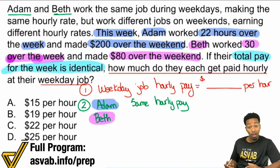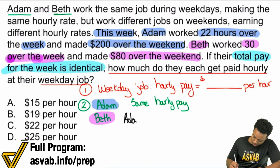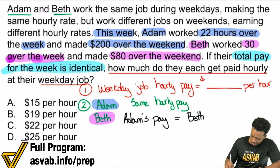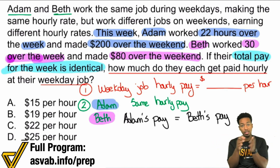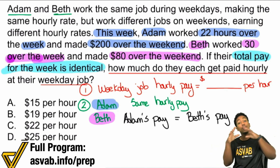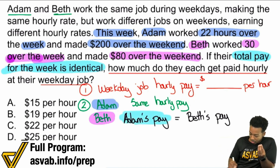How's that helpful? Well, it's helpful because right here we can say that Adam's pay equals Beth's pay. So the total pay for the whole week — Sunday through Saturday, the whole week — it's the same. How can we use that to our advantage? We can use that to our advantage. That's really, really important.